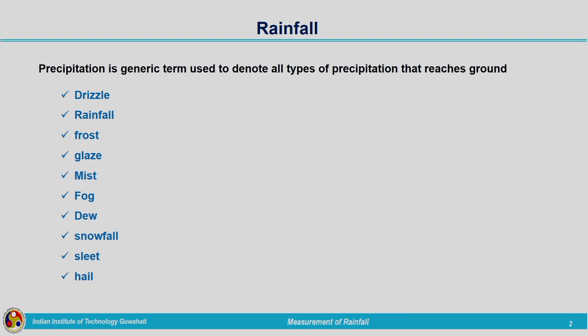Precipitation is the generic term used to denote all types of precipitation that reaches the ground. We have seen different forms: drizzle, rainfall, frost, glaze, mist, fog, dew, snowfall, sleet, and hail. Out of that, the major important one is rainfall. In this lecture we will see the measurement of rainfall.